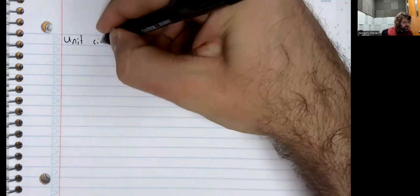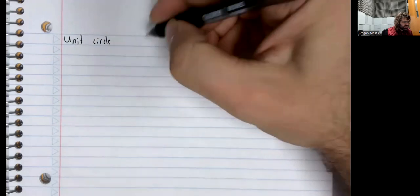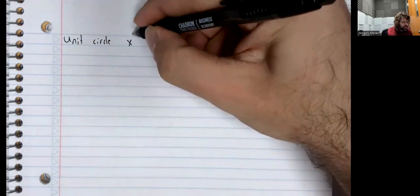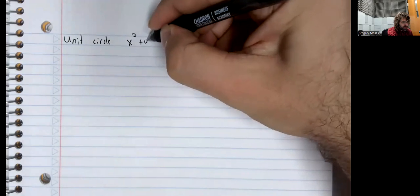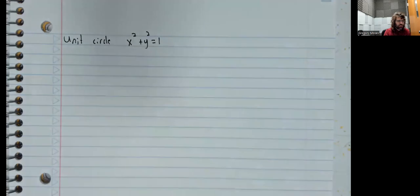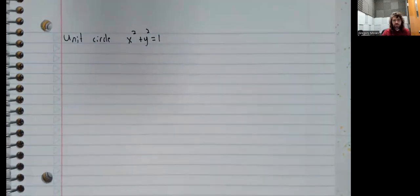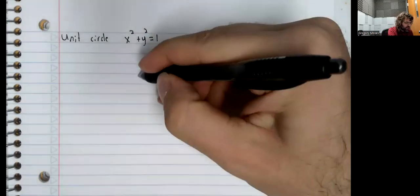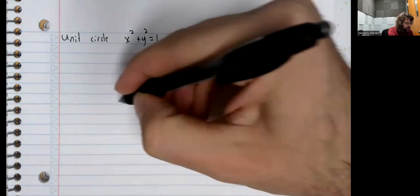So radians, let's define the unit circle. This, as a math formula, is x squared plus y squared equals one.